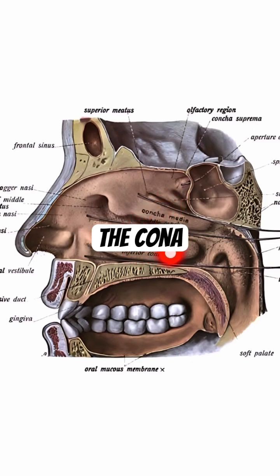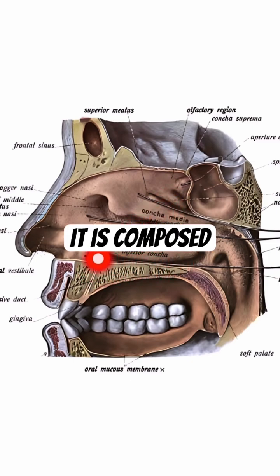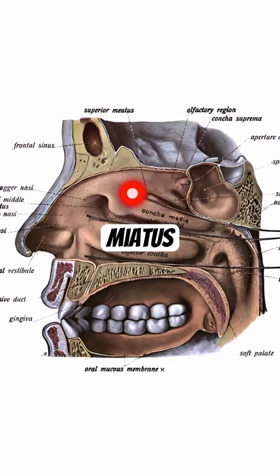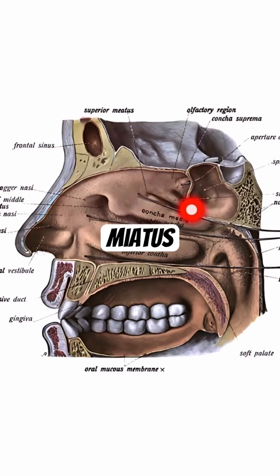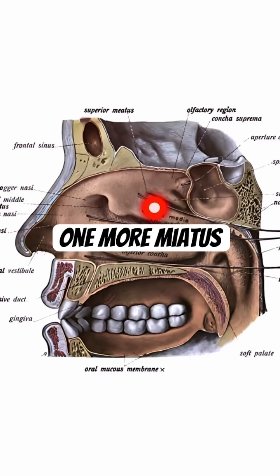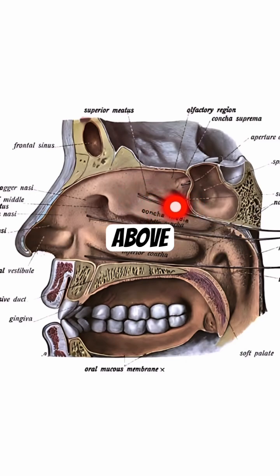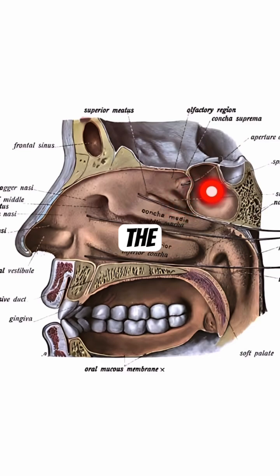The space between the conchae is called the meatus. It is composed of the inferior meatus, middle meatus, and superior meatus. One more meatus is present — it is located above the superior concha, namely the supreme meatus.